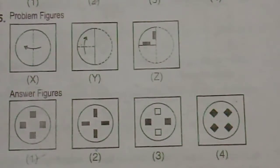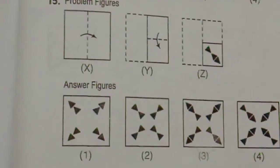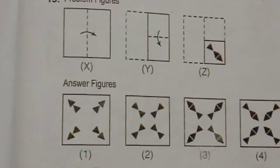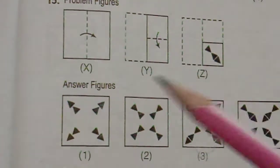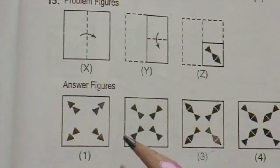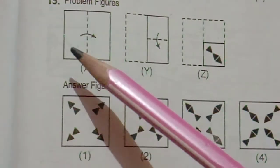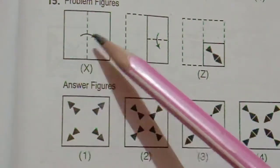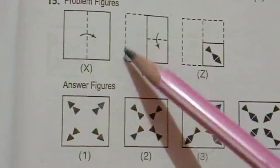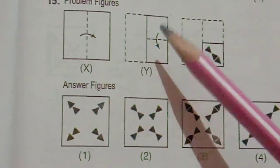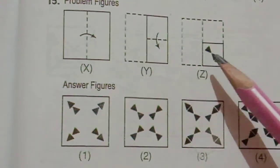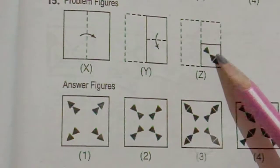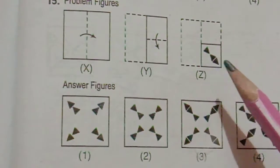So the second is the answer. Let's see one more example. This next problem will be a little bit difficult. You can see here one paper is there — this is the first folding, and after folding this one again there is a second folding. After that we have to cut like this.